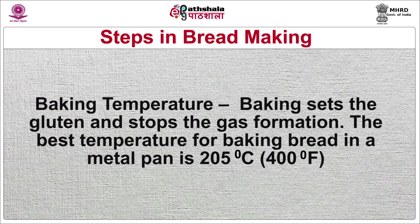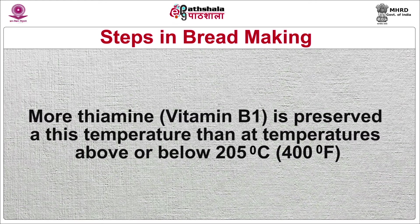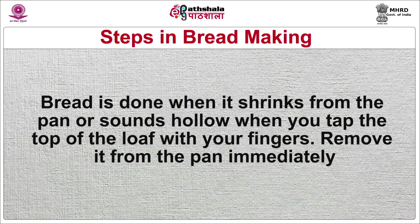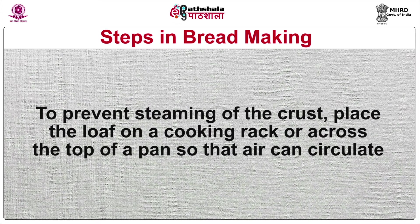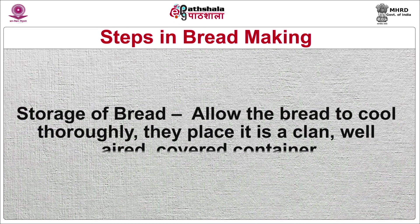Baking temperature: baking sets the gluten and stops the gas formation. The best temperature for baking bread in a metal pan is 205 degrees centigrade; more thiamine (vitamin B1) is preserved at this temperature. Bread is done when it shrinks from the pan or sounds hollow when you tap the top of the loaf. Remove it from the pan immediately to prevent steaming of the crust. Place the loaf on a cooling rack so that air can circulate around it.